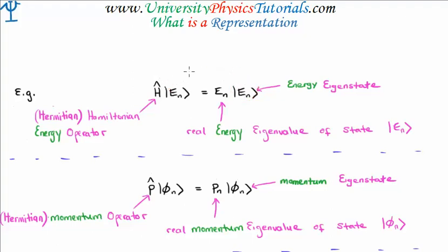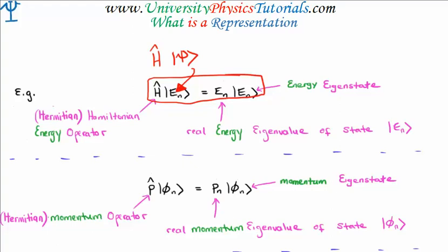As we said at the end of the last video, if our system begins in a state which is not an eigenstate of the Hamiltonian — an arbitrary quantum state — then the system has to decide what eigenstate it's in. It must collapse or project onto one of the eigenstates of the particular operator, and that gives us our eigenvalue equation.